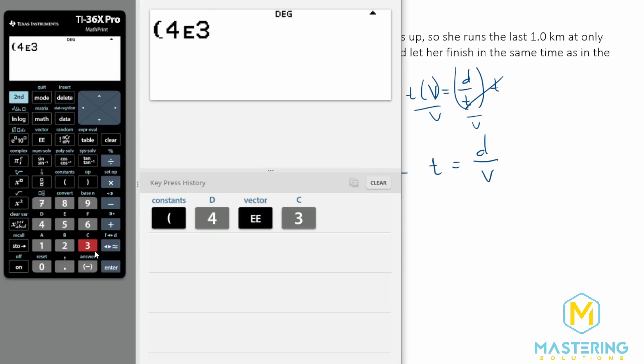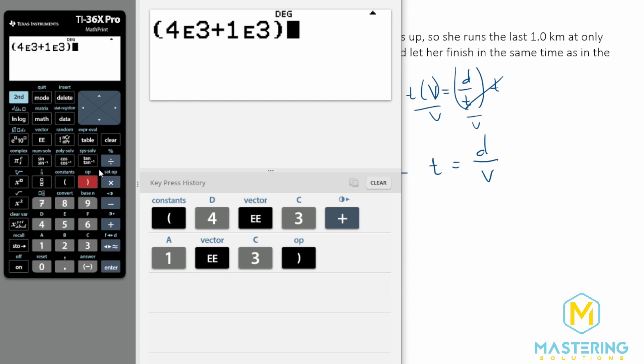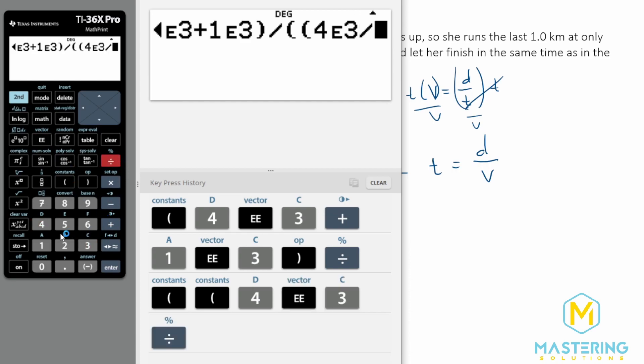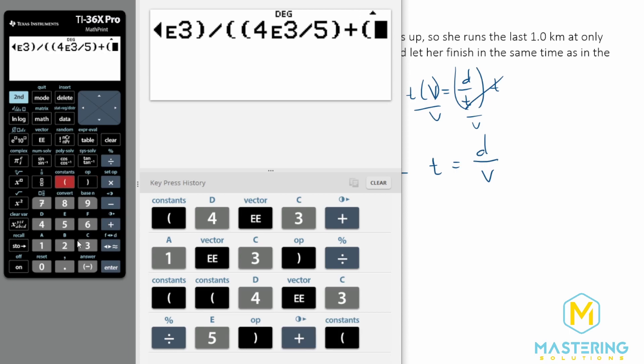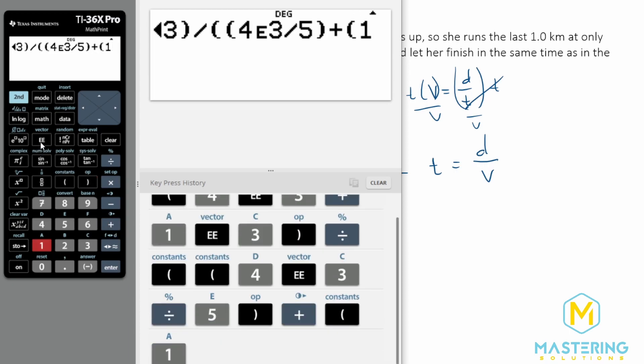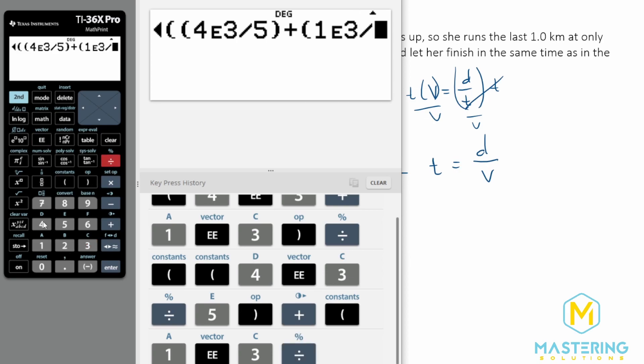4 times 10 to the third plus 1 times 10 to the third, all divided by 4 times 10 to the third divided by 5 meters per second, plus 1 times 10 to the third divided by 4 meters per second.